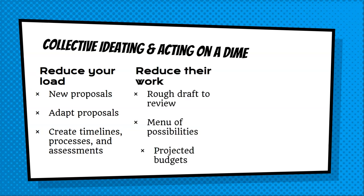Grant writers can also use AI to build out things that other institutional members can review. For instance, if you're working with an instructional designer on a project, you can use AI to sketch out your plan in their language and provide it as a conversation starter rather than starting from scratch. You can also extend that further to create a menu of ways the collaboration or grant might work, and you can start using AI to scope out budgets.